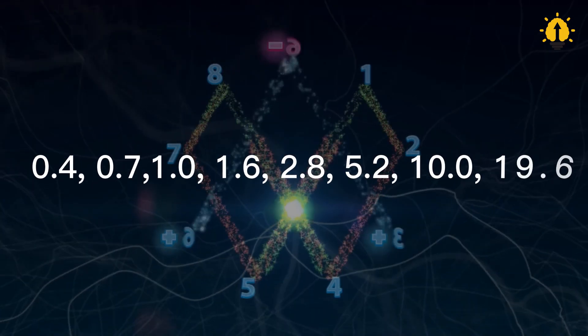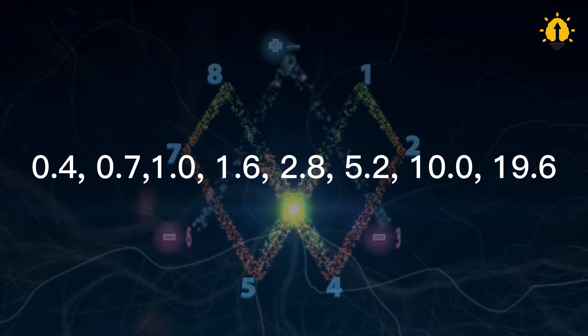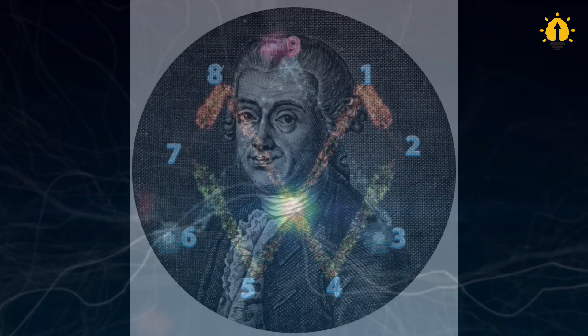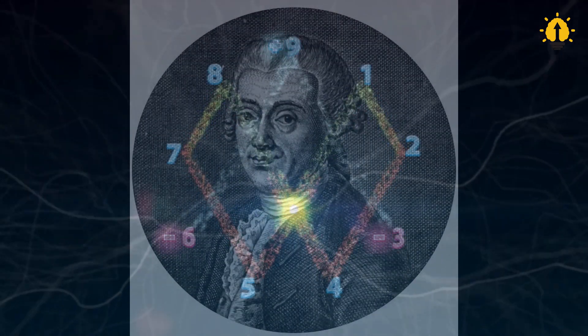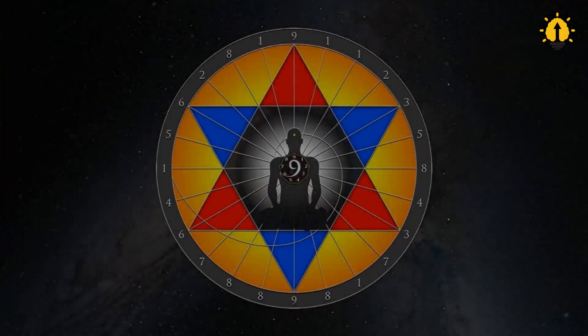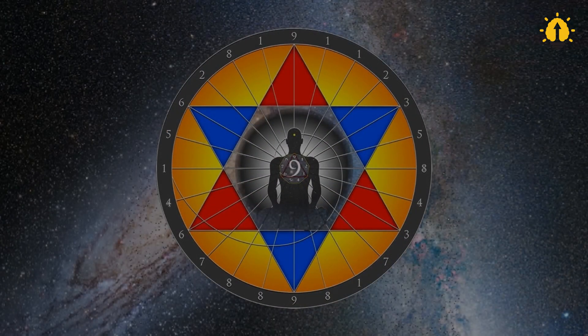This sequence of numbers was accidentally discovered in 1766 by German astronomer Johann Daniel Titius. At first glance, it seems nothing special. But under the eyes of astronomy enthusiasts, it's different.